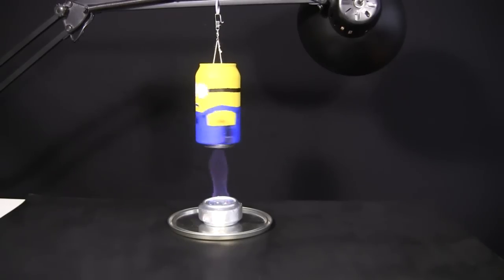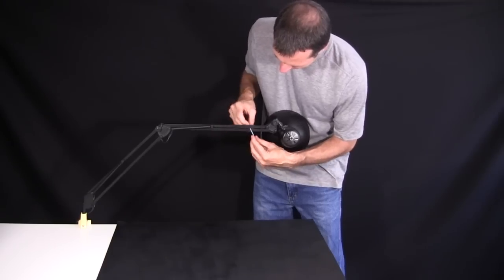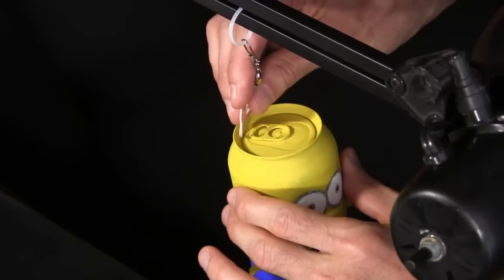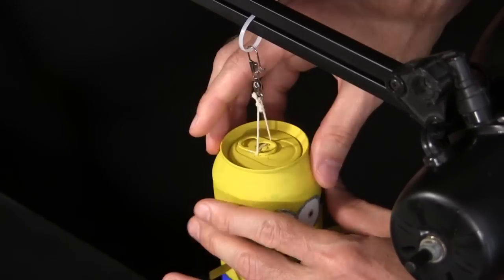Time to get the Minion spinning. I'll hang it from this lamp since it's adjustable. I attach a tie strap followed by a fishing swivel and then a loop of string. The Minion steam engine is hung by putting the string under the tab.